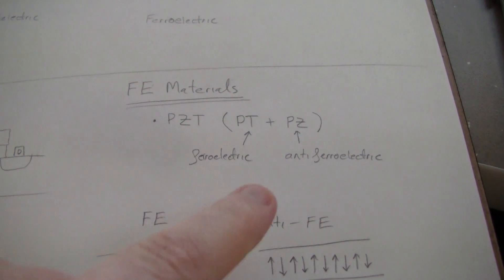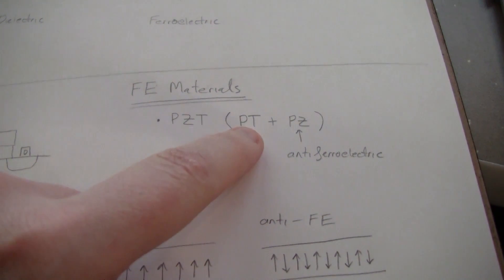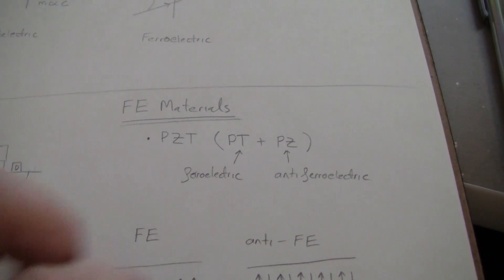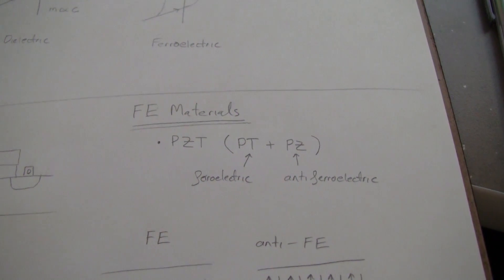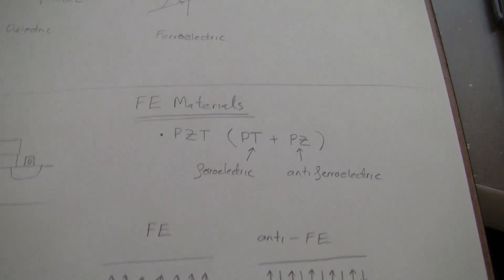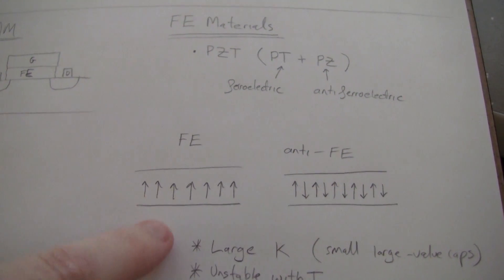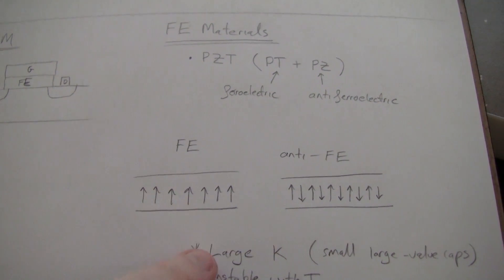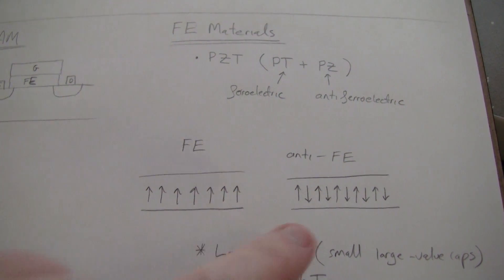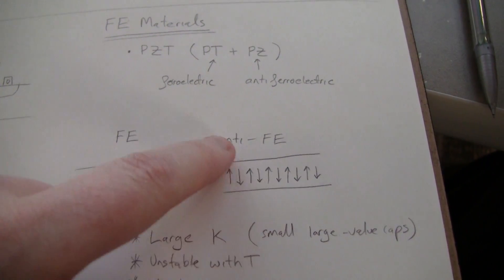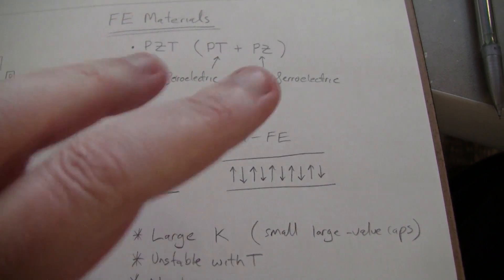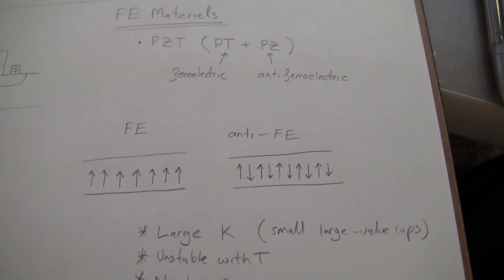So we talked about PZT which is this solid solution of lead titanate and lead zirconate - the mixture of those two. One is ferroelectric and one is anti-ferroelectric so they tend to cancel each other out. Ferroelectric materials have these domains kind of like the magnetic domains in ferromagnets that are lined up all in the one direction. Anti-ferroelectric materials have them in opposite directions - in a bulk amount of the material they tend to cancel each other out.